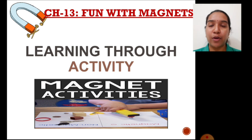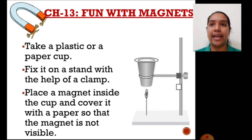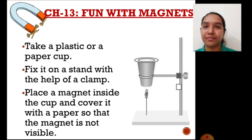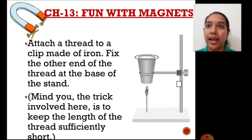Let us learn more facts about magnets by doing a few activities. For this activity, you need to take a plastic cup or a paper cup. Fix it to a stand with the help of a clamp. Now, put a magnet inside the cup — of a weight that the paper cup can balance — and cover this cup with an opaque paper so that the magnet is not visible from the outside. Attach a thread to a paper clip or a safety pin made of iron, and fix this thread to the base of the stand. Note: the length of the thread should be short to see the proper result of this activity.